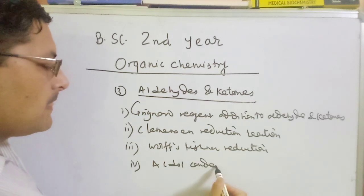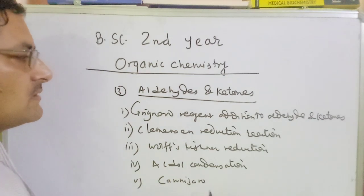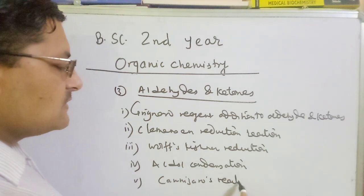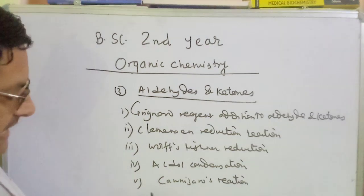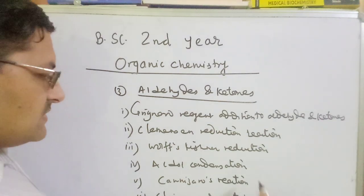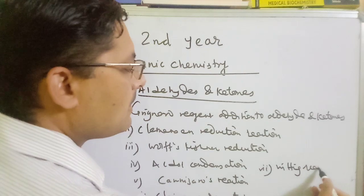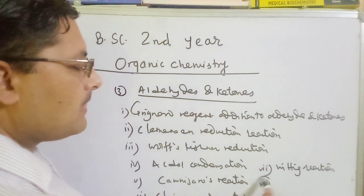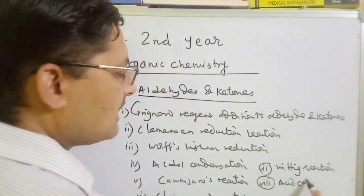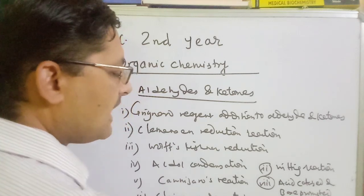Similarly, Wolff-Kishner reduction reaction. We will talk about aldol condensation reaction — this is number 4. Number 5 is the Cannizzaro reaction. Cannizzaro reaction. Cannizzaro condensation reaction. Number 8 is acid-catalyzed and base-promoted halogenation of ketones.